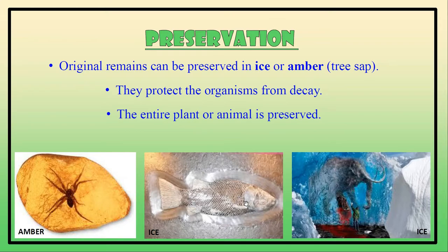Preservation: original remains can be preserved in ice or amber. Amber is tree sap. When insects get trapped by amber, they are preserved inside for millions of years. They do not decay because amber protects the organism from decay, and the entire plant or animal can be preserved under ice or in amber.